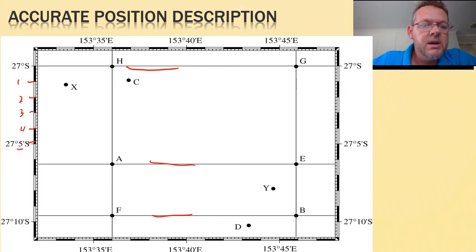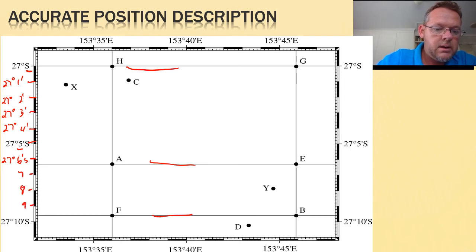So each of these bigger markings must equal a minute. So this would be 27 degrees and 1 minute, 27 degrees 2 minutes, 27 degrees 3 minutes, 27 degrees and 4 minutes. And they are all south. So each of these big ones, that would be 27 degrees 6 minutes, 7, 8, 9 and 10. So that works out well.